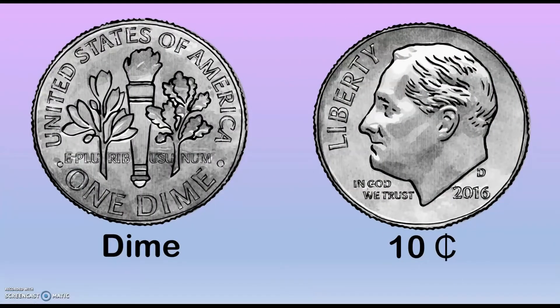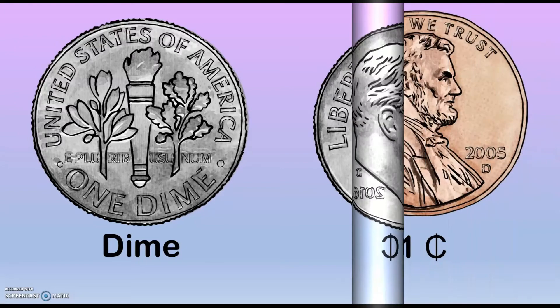This is a dime. A dime has two sides and it's worth 10 cents. On one side there's a picture of a torch. It also has the words 'one dime.'